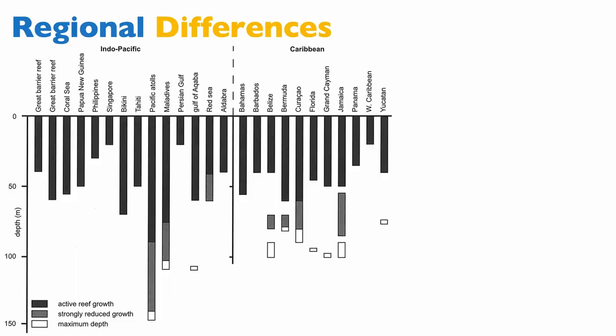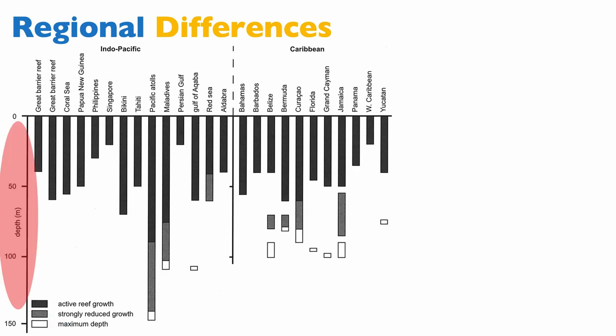One of the reasons the first diagram I showed you was theoretical and had no scale in terms of water depths or light penetration is because these are extremely variable. Here I'm showing you multiple locations. In black, you have the area of active reef growth. In gray, it's areas of strongly reduced reef growth. And in white, it's areas of maximum depths — the last area in which the reef can grow. The vertical axis is meters below sea level, and we have different locations.